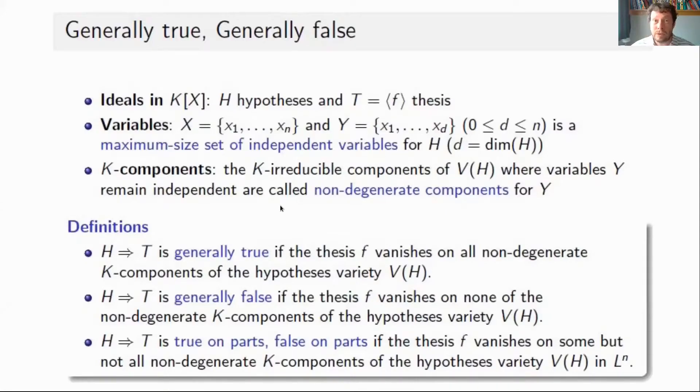We use the notion of K-components. This is very important to separate components related to true parts and other components related to false parts of a statement. K-components play a very important role in the theory, similar to factors of integers in basic number theory. We have generally true and generally false statements, and a third: true on parts and false on parts if the thesis vanishes on some but not all non-degenerate K-components of the hypothesis variety.